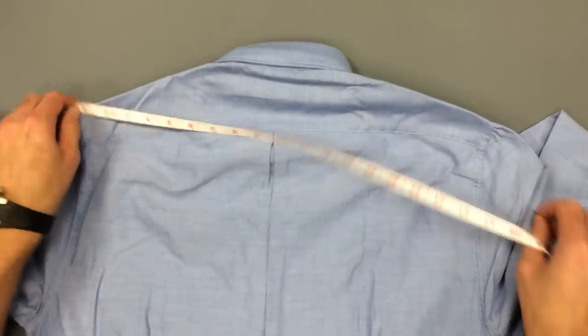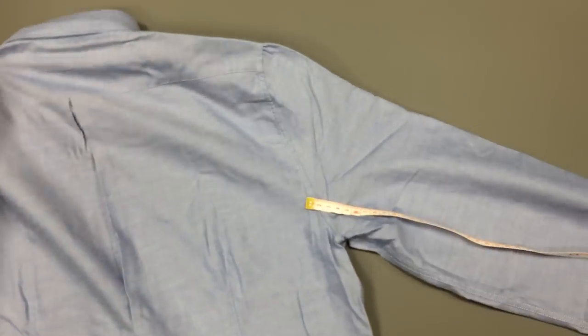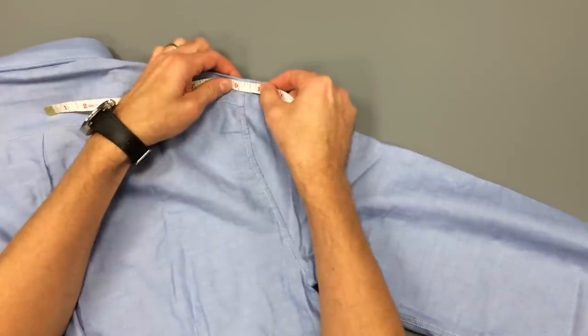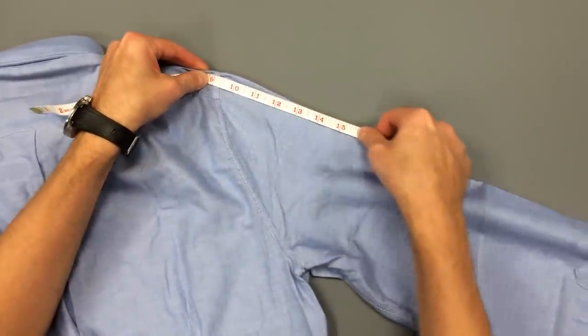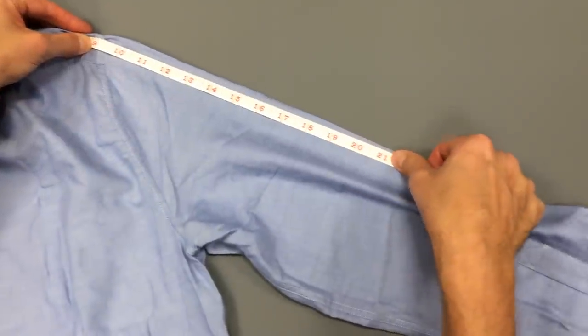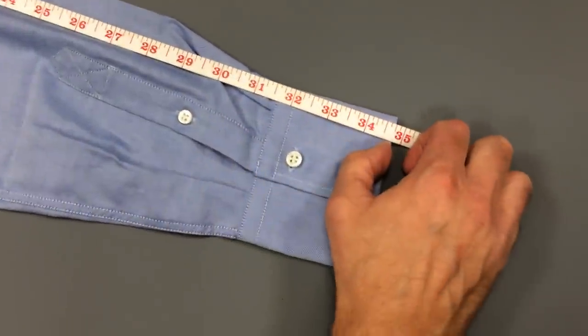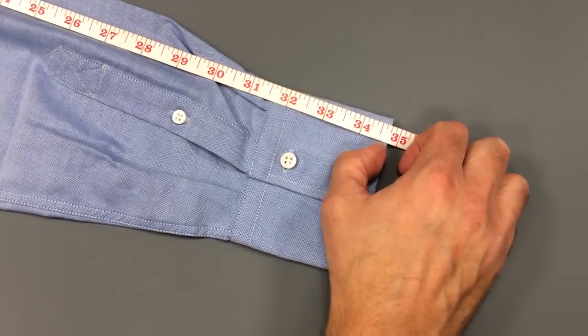Now for the sleeve measurement. To do this properly, take half of the shoulder measurement, which would be nine and a quarter inches. And you start measuring from the shoulder seam with the tape at nine and a quarter inches to the end of the cuff for your accurate sleeve measurement.